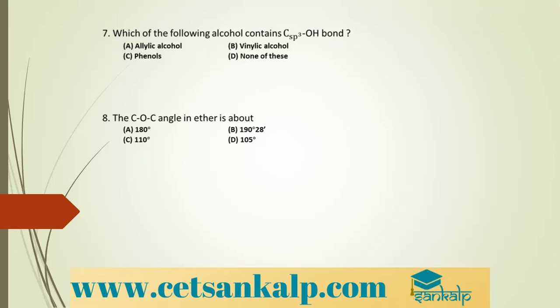Commercially, methanol is prepared by reduction of carbon monoxide using a copper-zinc oxide-chromic oxide catalyst at 573 K and 200 atmospheres pressure, giving CH3OH. The correct answer is reduction of carbon monoxide in presence of zinc oxide and chromic oxide.